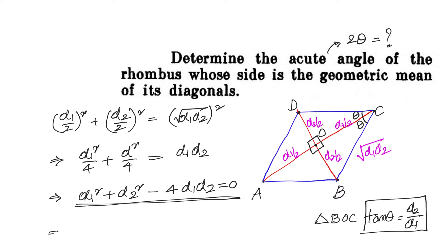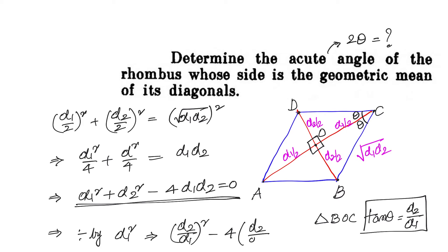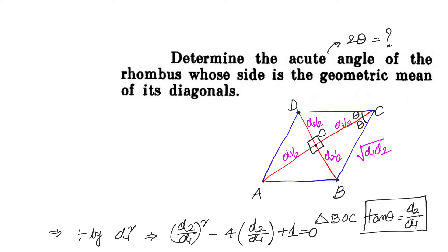Dividing d1² + d2² - 4d1d2 = 0 throughout by d1² gives (d2/d1)² - 4(d2/d1) + 1 = 0. Since d2/d1 = tan θ, we can write tan²θ - 4tanθ + 1 = 0.